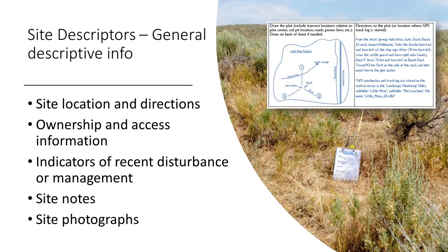Site descriptors are pretty much just what the term implies. They are descriptive information you record about the site you are measuring. This could include unstructured information on where the site is located, ownership and access information, indications of recent disturbance or management, and even photographs of the plot. The purpose of this type of unstructured site information is to give you reference information if you need to revisit a site or understand why you got a certain value for the indicators at the site. In other words, this kind of general site descriptive information can be very valuable to refer back to when you are analyzing your data.